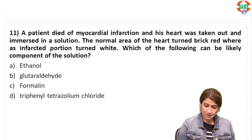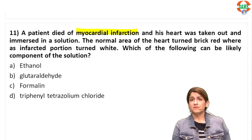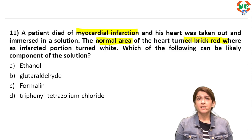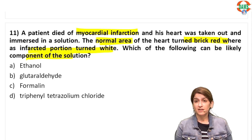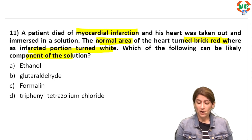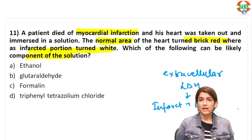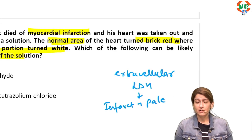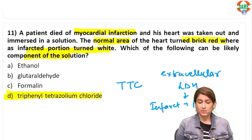A patient died of myocardial infarction; his heart was immersed in a solution. The normal area turned brick red while the infarcted portion remained white. This is the TTC stain — triphenyl tetrazolium chloride — used for MI hearts. Normal areas are red and infarcted areas are pale because extracellular LDH leaches out. The correct answer is option D, TTC.